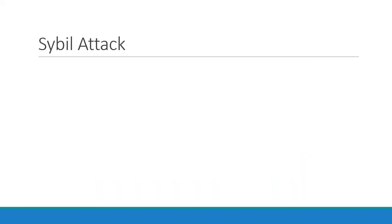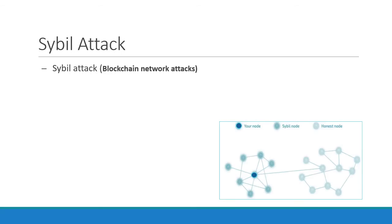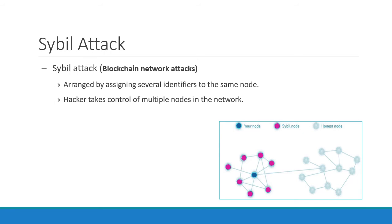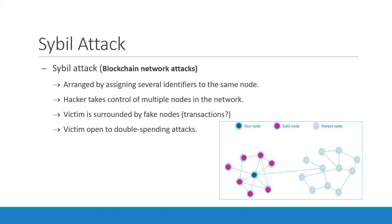In this part, we will discuss two types of attacks. The first one is the Sybil attack, which is one of the blockchain network attacks, where the attacker assigns several identifiers to the same node and then controls it. In such a case, the victim will be surrounded by fake nodes, also called Sybil identity nodes, that close up all his transactions and leave him open to double spending attacks.